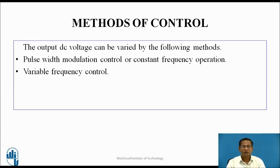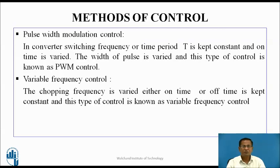The output DC voltage can be varied by the following methods. First, pulse width modulation (PWM) control or constant frequency operation: the switching frequency or time period T is kept constant and the on-time is varied — the width of the pulse is varied. Second, variable frequency control: the chopping frequency is varied while either on-time or off-time is kept constant.